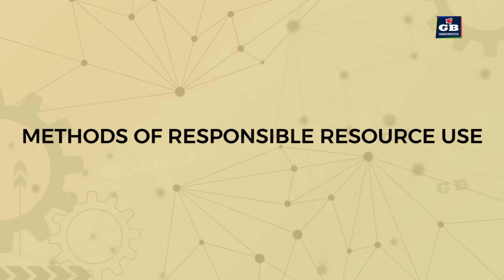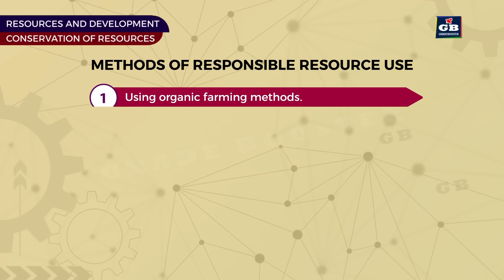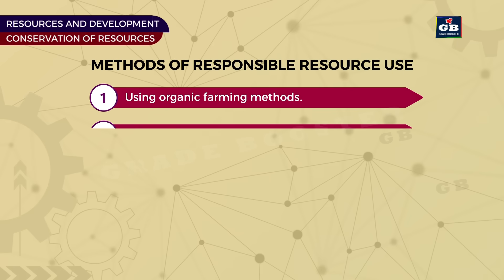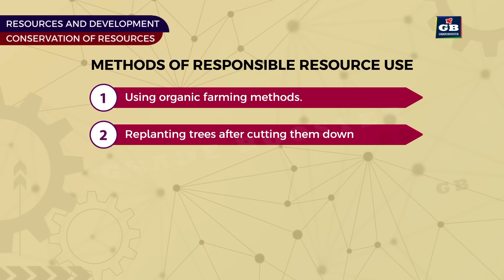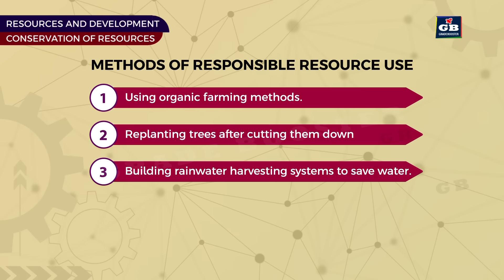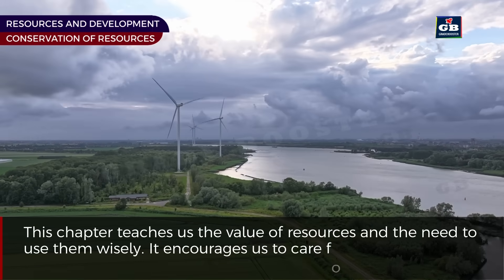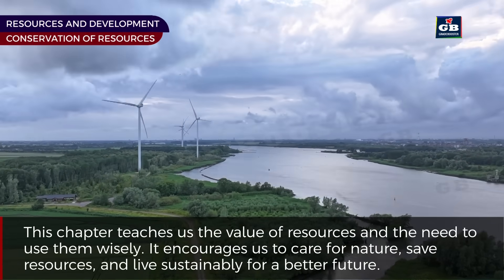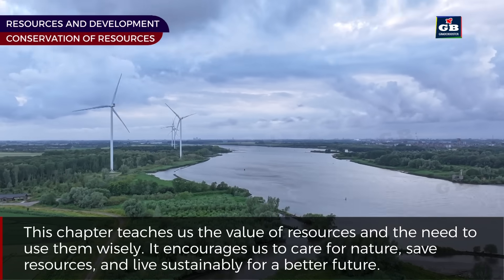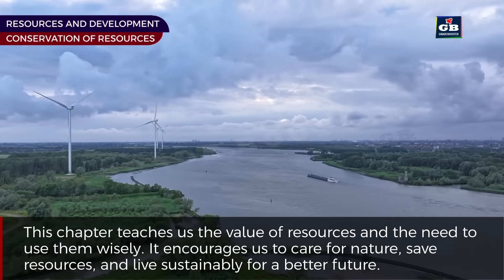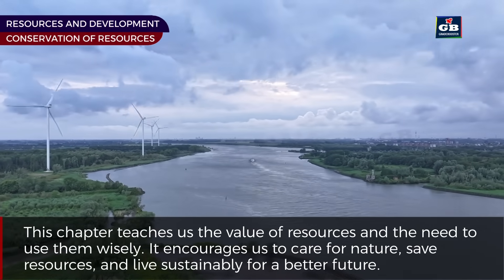Methods of responsible resource use include: using organic farming methods, replanting trees after cutting them down, building rainwater harvesting systems to save water, and using renewable energy like solar or wind power. This chapter teaches us the value of resources and the need to use them wisely. It encourages us to care for nature, save resources, and live sustainably for a better future.